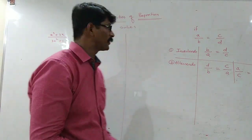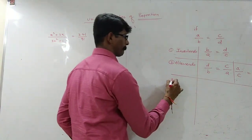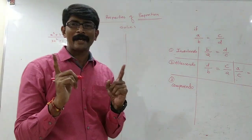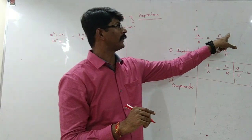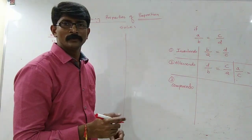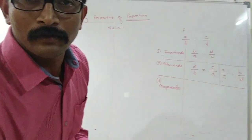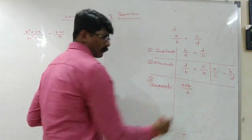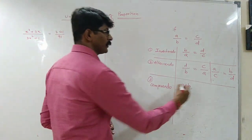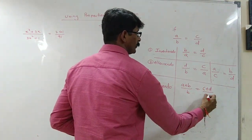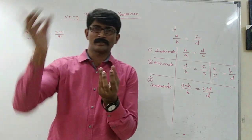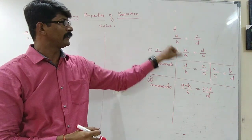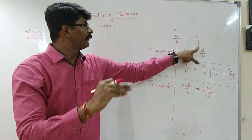Next one is Componendo. What is Componendo? We add one on both sides. If I add one on each side, the denominator gets added into the numerator, giving A plus B upon B equals C plus D upon D. Whatever is the denominator is just added to the numerator on both sides. Over here the denominator is B, which I added with A, and over here the denominator was D, which I added with C.